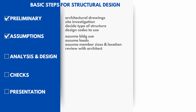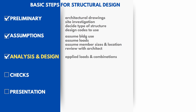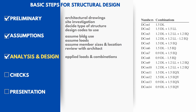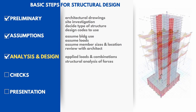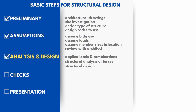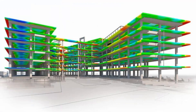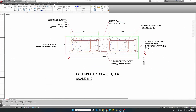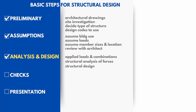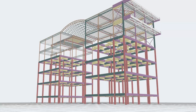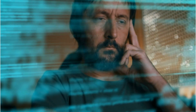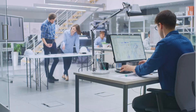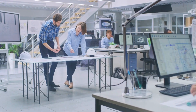Now we are ready to proceed to the main stage of the design — analysis and design. This is where we need to calculate all loads and load combinations, perform an analysis of all forces applied on the structure, and perform a structural design on each member — calculating the necessary reinforcement for concrete, connections for steel members, and so on. This stage is usually carried out by specialized software. The engineer creates a model of the structure and the software performs thousands of calculations and iterations to return all structural analysis and design results.